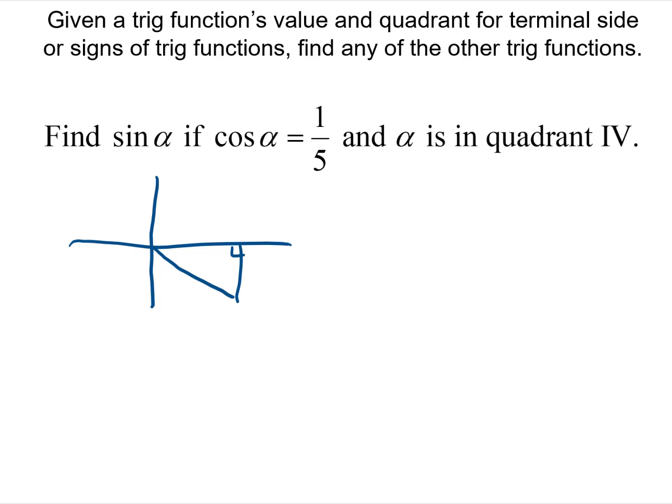So we're going to do adjacent over hypotenuse and then we can find this missing side because it's going to be 1 squared plus y squared equals 5 squared and so y squared equals 24.